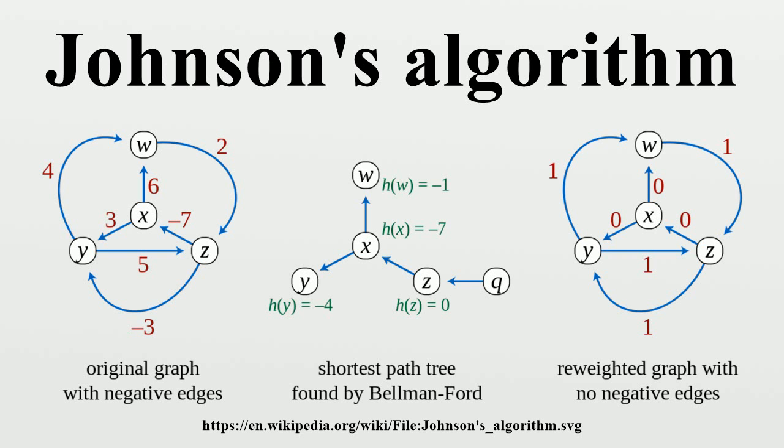Algorithm Description: Johnson's algorithm consists of the following steps. First, a new node Q is added to the graph, connected by zero-weight edges to each of the other nodes. Second, the Bellman-Ford algorithm is used, starting from the new vertex Q.